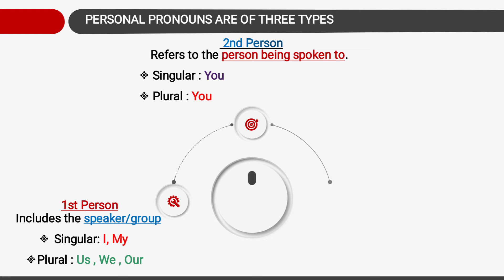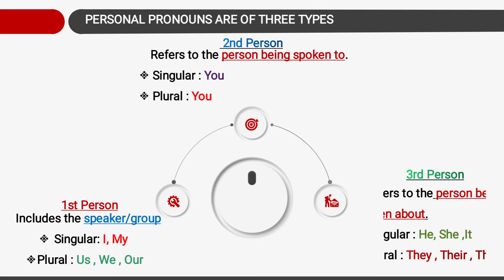Next comes third person. Third person refers to the person being spoken about. In singular we use he, she, it. And in plural we use they, their, them. So these were the types of personal pronoun.